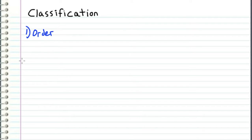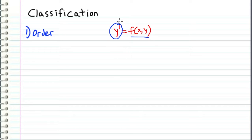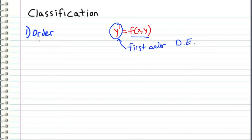That brings us to this video, where we will talk about how we classify those equations. The first characteristic that we classify a differential equation by is its order. When we talked about slope fields, we had an equation where this is the first derivative of our unknown function, and it is a function of x and y. Since we are dealing with only the first derivative, we call this a first order differential equation. What order means is the term that carries the highest derivative.